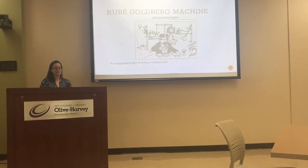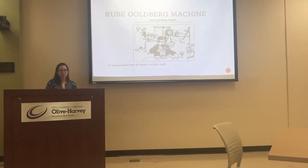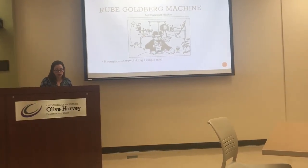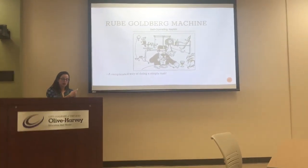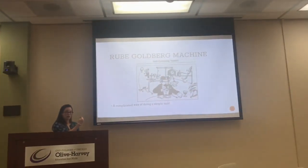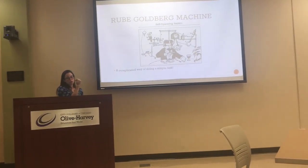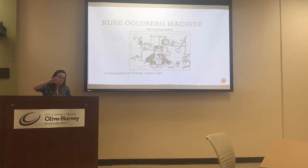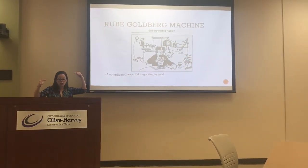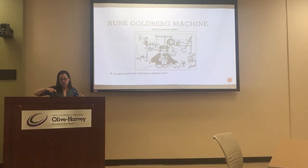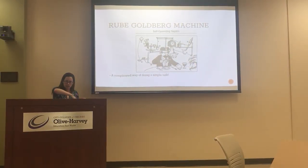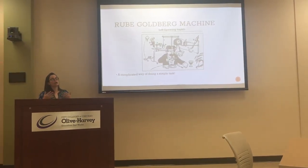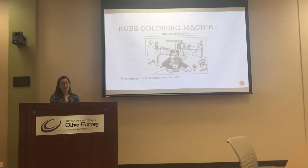An example would be a self-operating napkin. Obviously it's easy enough to just pick up the napkin and use it. His machine starts with lifting up a spoon, which makes the lever turn and the spoon shoots a cracker up, which feeds the bird, which then changes the weight, which adds stuff into the bucket, which changes another lever, which opens up a spark, which sets a rocket, which has a scythe that moves the napkin back and forth. An extraordinarily complicated way of doing an extraordinarily simple task.